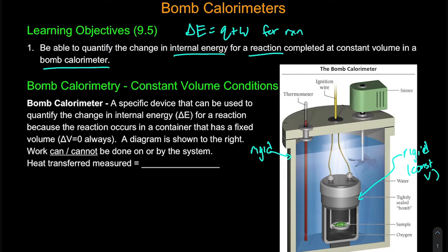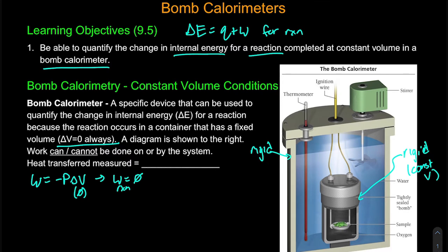So for a bomb calorimeter, what we'll notice is that our change in volume will always be zero. A reaction does not have the ability to expand nor does it have the ability to contract. And if we think of how that relates back to work — we have defined work as negative P times delta V — and if delta V is zero, that must mean work is zero. A reaction does not have the ability to expand or contract, so therefore work can't be done by or on the reaction.